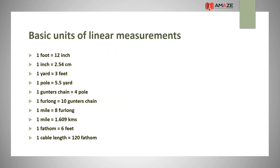Basic units of linear measurements: 1 foot = 12 inches; 1 inch = 2.54 cm; 1 yard = 3 feet; 1 pole = 5.5 yards; 1 Gunter's chain = 4 poles; 1 furlong = 10 Gunter's chains; 1 mile = 8 furlongs; 1 mile = 1.609 km; 1 fathom = 6 feet; 1 cable length = 125 fathoms.